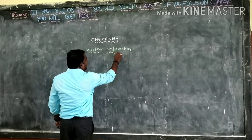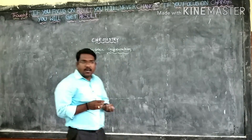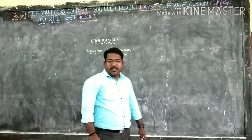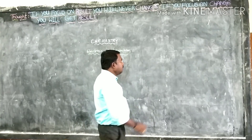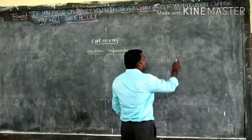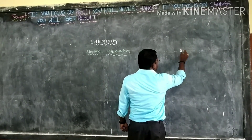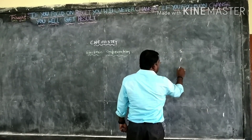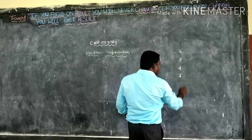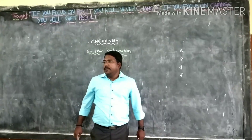So basically, how many orbitals are there in chemistry? Four orbitals. What are they? They are S, P, D, and F. These four are the orbitals.